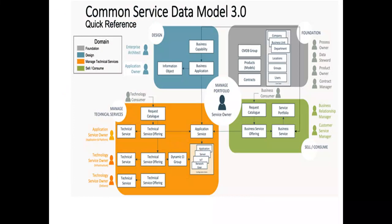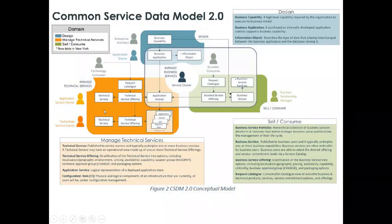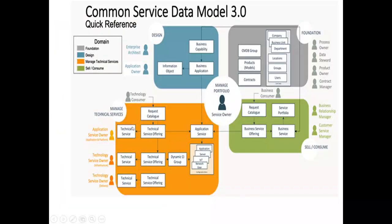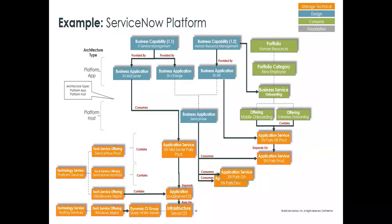Then in 3.0, ServiceNow introduced a foundation domain as well. It says sell and consume is fine, but what is required for services in the market — data like user, company, location, and groups — this becomes the foundation data. Also, in 2.0 there was only technical service and offering, but in 3.0 they added one more persona: application owner from application, technical owner from infra, and technical owner from the delivery perspective.